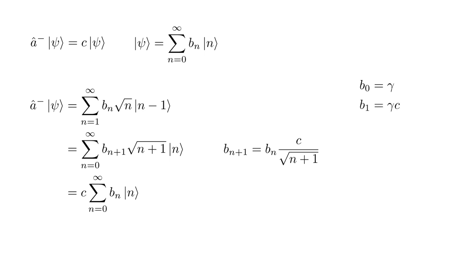Let's set b0 equal to some constant γ. Then b1 equals γ times c. b2 equals γ times c² over √2, and in general, bn equals γ times c^n over √(n!).